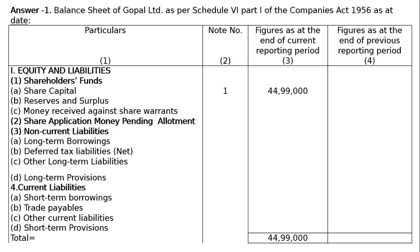Balance sheet of Gopal Limited as per Schedule 6 Part 1 of the Companies Act 1956 as at date. There will be 4 columns: Column 1 - Particulars, Column 2 - Note to Accounts, Column 3 - Figures at the end of current reporting period, Column 4 - Figures as at the end of the previous reporting period.